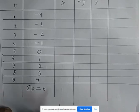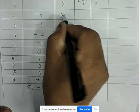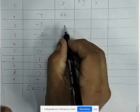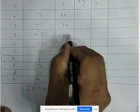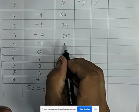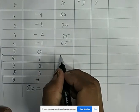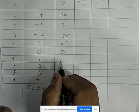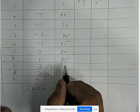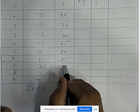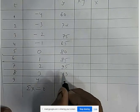The profit values (y) are: 60, 72, 75, 65, 80, 85, 95, 103, 105.